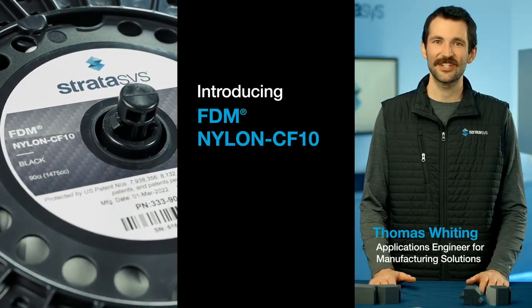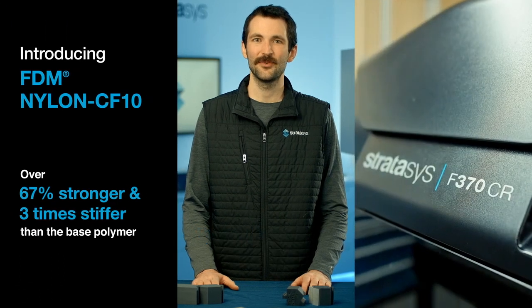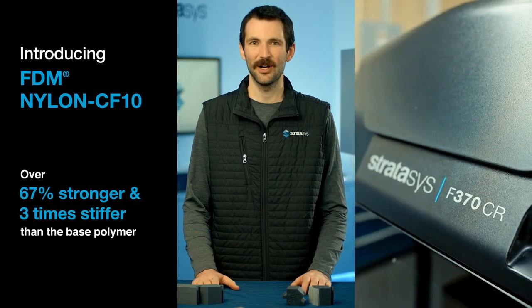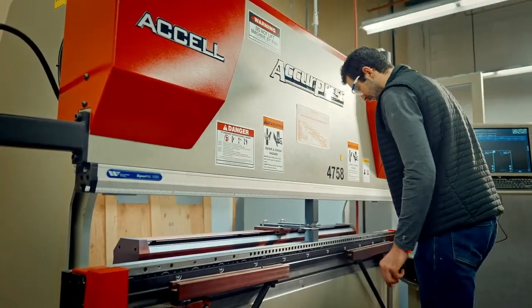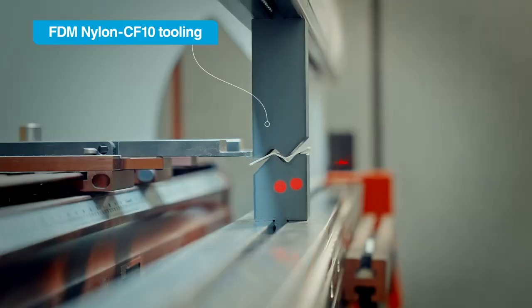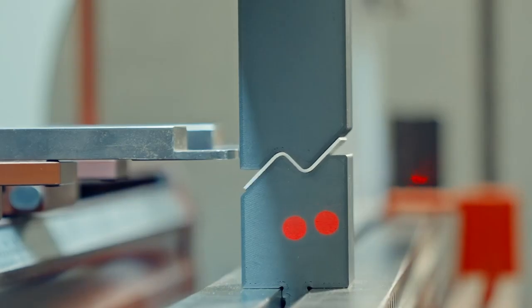FDM Nylon CF10 is 67% stronger and almost three times as stiff as the nylon base polymer. Press brake tools are a great example of the high demand factory floor applications this material is perfect for.